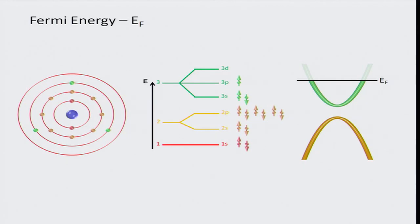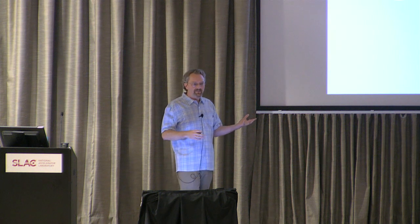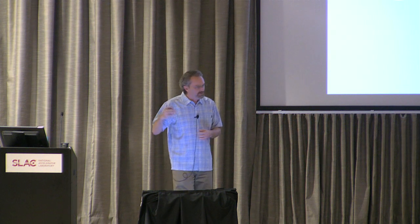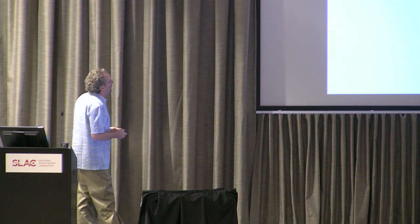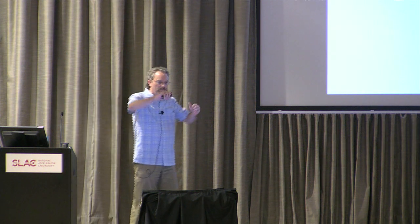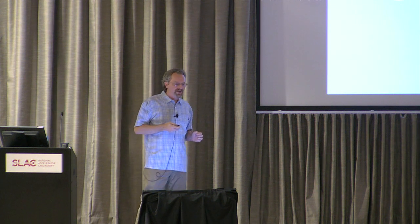The electrons also have spin — think of it as the magnetic moment of the electron, represented by arrows pointing up or down. If you have a material where electrons on all the atoms are pointing in the same direction, you generate a net magnetic moment — this is a magnet, just like on your refrigerator. However, if they're pointed in the opposite way, then this is an anti-ferromagnet. So spins actually determine the magnetic properties of the material itself.